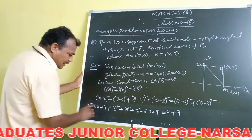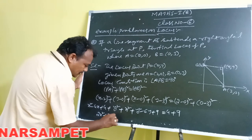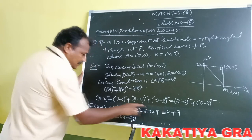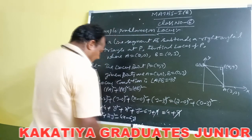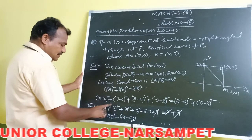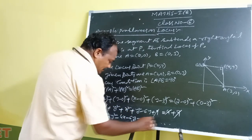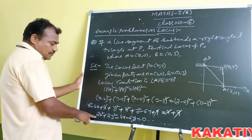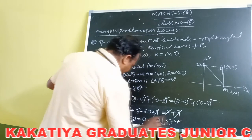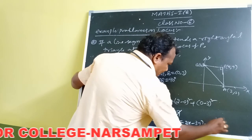Simplifying: x² plus x² gives 2x², y² plus y² gives 2y², the x term is minus 4x, the y term is minus 6y. Both 9's cancel and both 4's cancel on each side, giving 2x² plus 2y² minus 4x minus 6y is equal to 0. Dividing all terms by 2: x² plus y² minus 2x minus 3y is equal to 0.